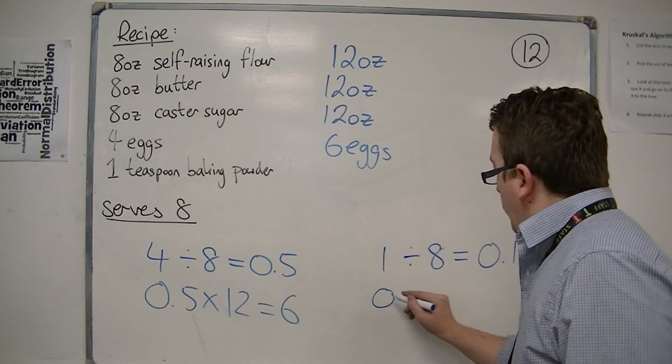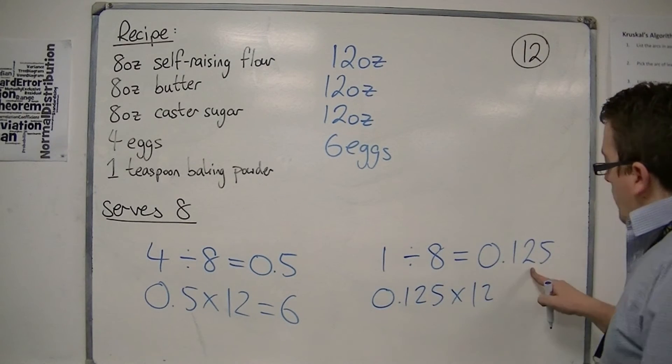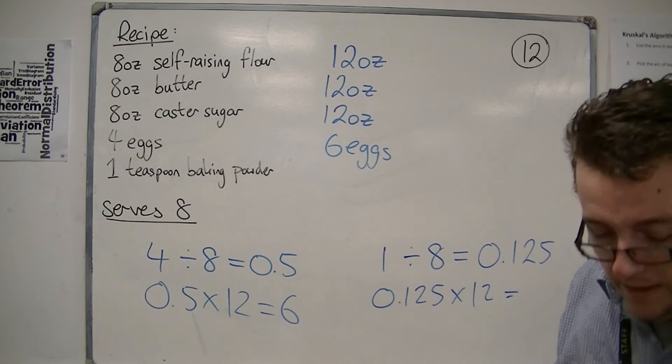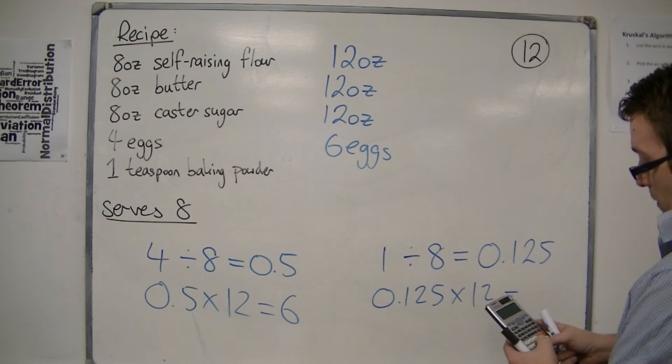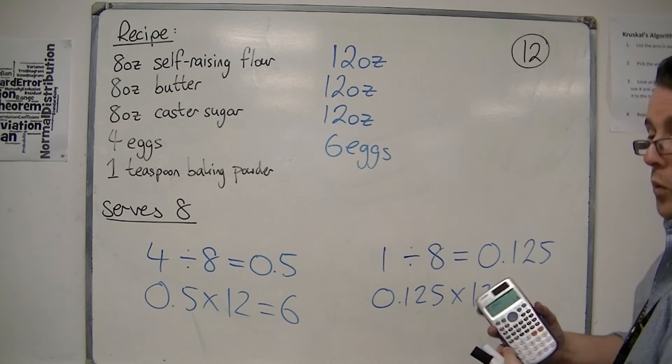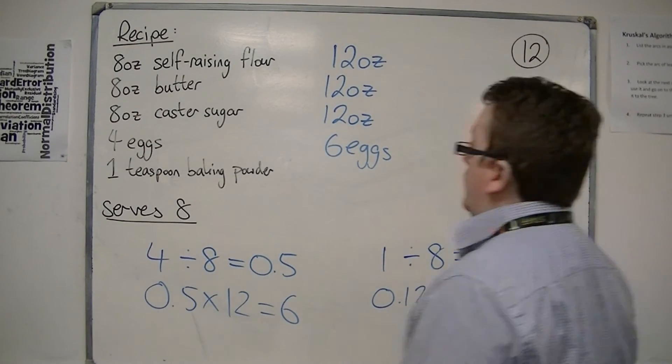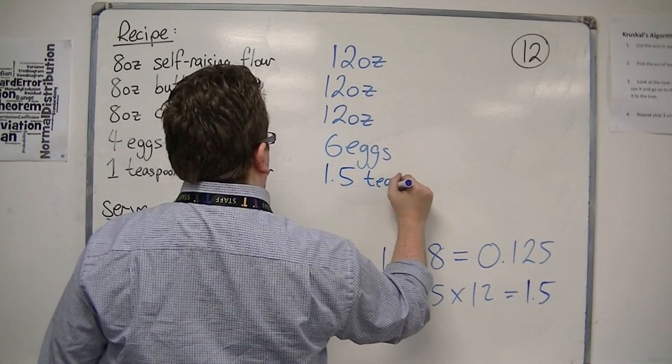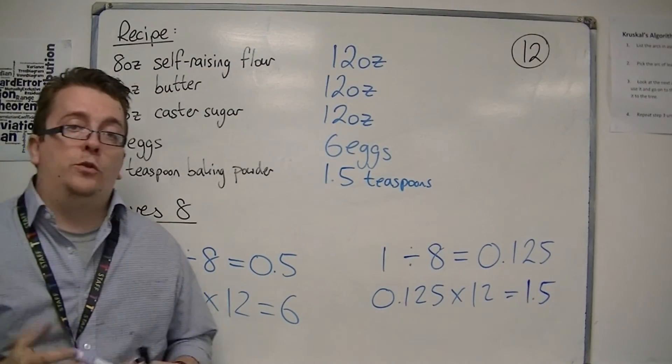I'm going to need to multiply that by 12, because that's how much one person needs. So if you do that on your calculator, 0.125 times 12 is 1.5. So you need 1.5 teaspoons of baking powder in order to make this cake.